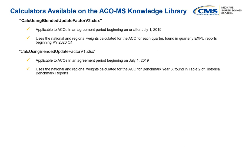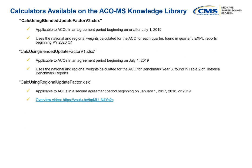The calculator with the file name CalcUsingRegionalUpdateFactor.xlsx applies a regional expenditure update factor and is applicable to ACOs in a second agreement period beginning on January 1, 2017, 2018, or 2019. The video tutorial of this calculator can be viewed at this link, which can also be accessed on the Program Resources section of the ACO MS Knowledge Library by searching Updated Benchmark Estimation Tool in the Filter by Title field.